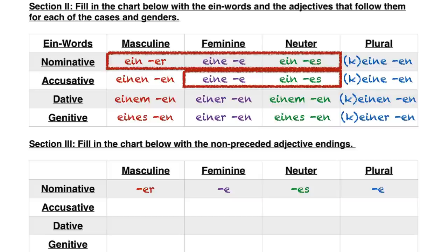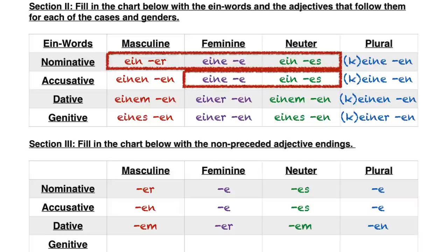The non-preceded endings follow the same pattern as the der-word: der, die, das, die — and you'll notice that the R, E, S, E endings still apply for adjectives not preceded by a der-word or an ein-word. Same thing happens in the accusative case. In the dative case we have M, R, M, N — the mermim pattern or whatever mnemonic device you use. So all it is, is that you have to remember the endings from your der-word chart — RESN and mermim — and you can have your non-preceded adjective endings.